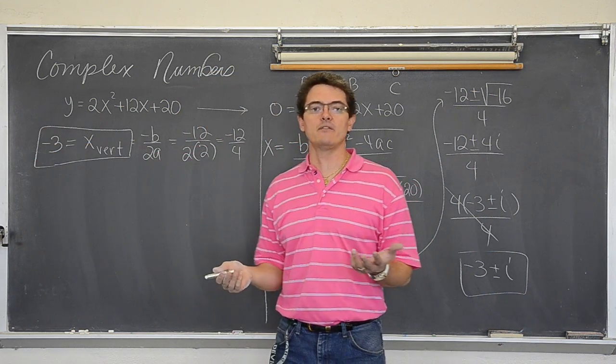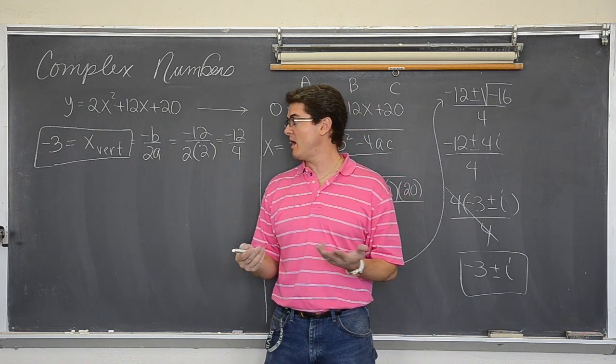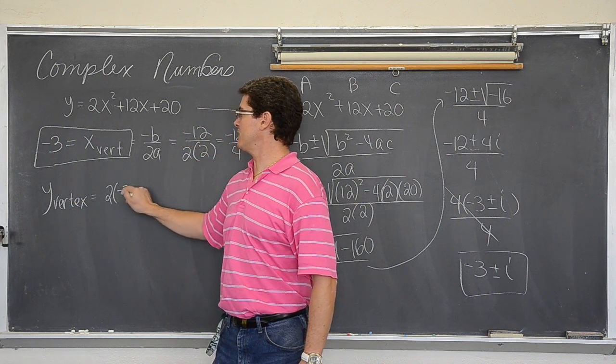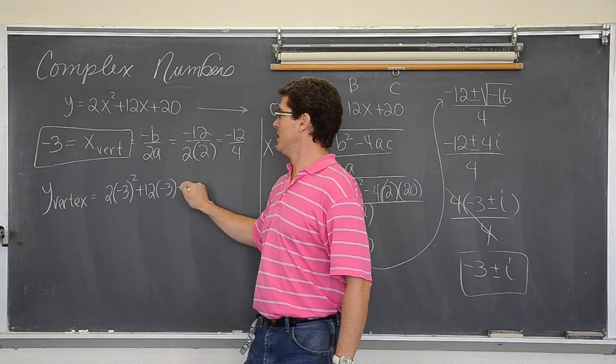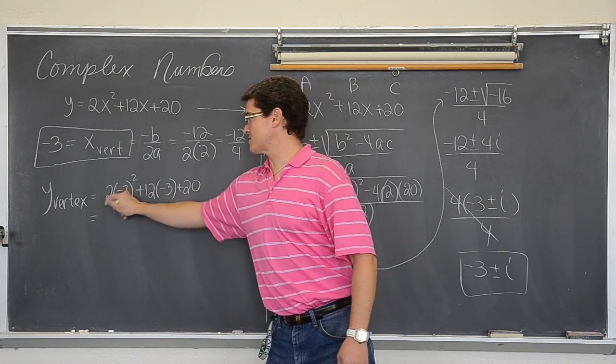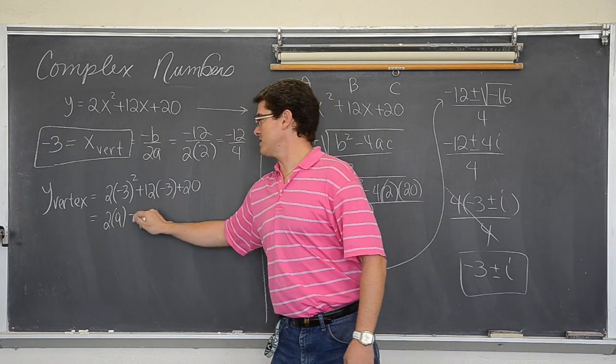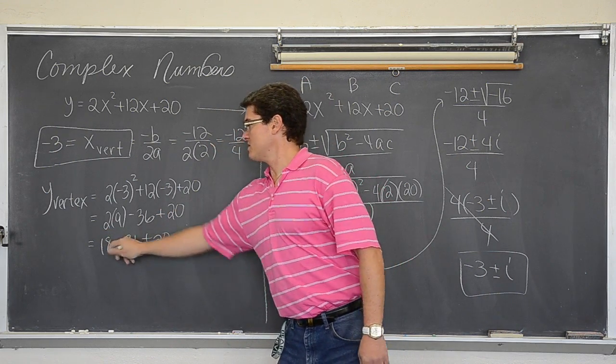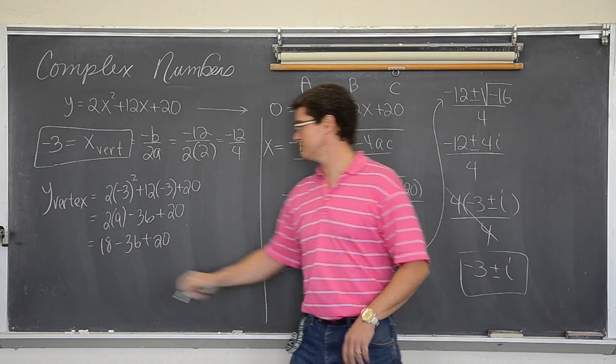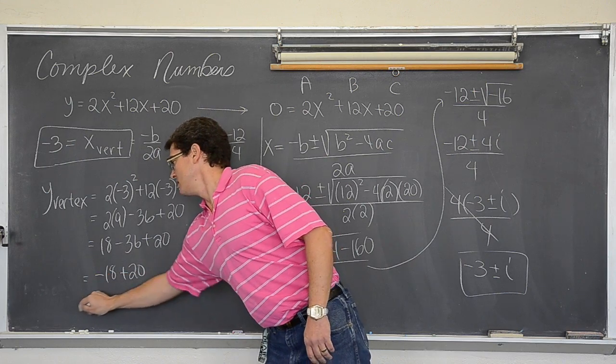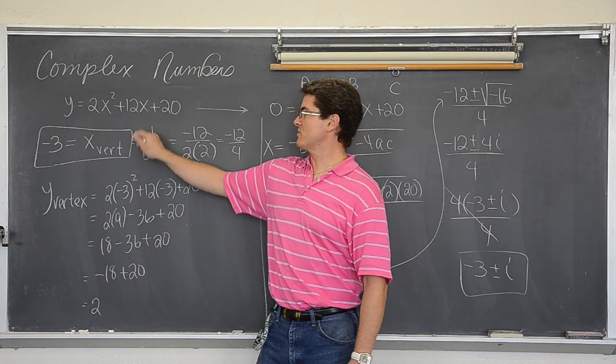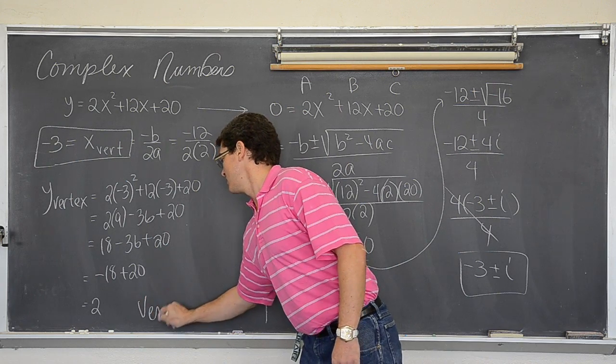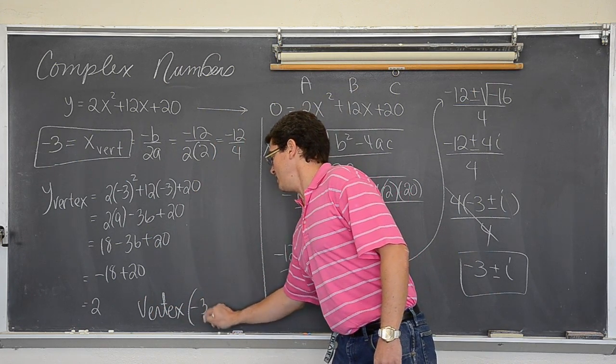How do I find the y value? How do you always find y values? You plug in your x's and you find your y. So the y of my vertex is equal to 2 times (-3)² plus 12 times (-3) plus 20. Hopefully I can do this off the top of my head fairly easy. This is 2 times 9. This is negative 36 and this is positive 20. So I have 18 minus 36 plus 20. What is 18 minus 36? I believe that is negative 18 plus 20 which is 2. So the x of my vertex through this little formula you might remember from geometry is negative 3 and the y is 2. So my vertex is at (-3, 2).